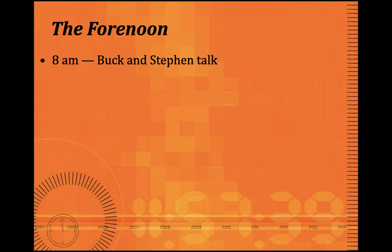Hour by hour, 16 June 1904 is discussed in the novel. First you see the morning hours, 8 a.m. to 10 a.m., where Stephen Daedalus and Leopold Bloom are shown separately. After that, from 11 o'clock onwards, their story is told together, and they eventually meet.